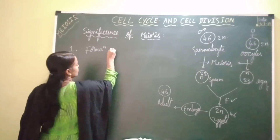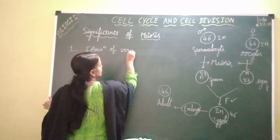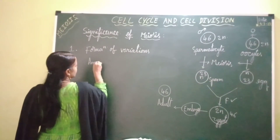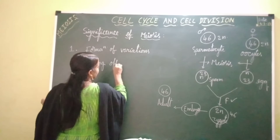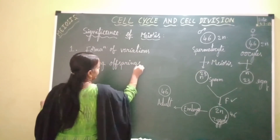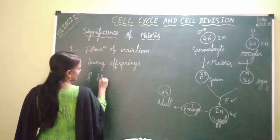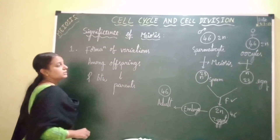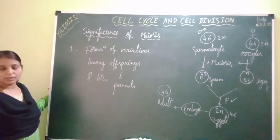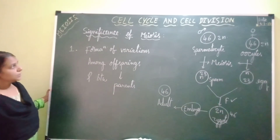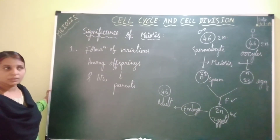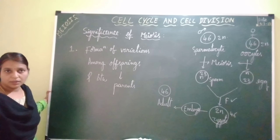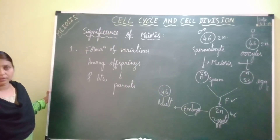Meiosis ensures the formation of genetic variations among offspring and between offspring and parents. These variations are important for evolution — that is, the formation of one species from another species. This is the significance of meiosis. In the next video, I will be giving some questions and tricks to solve tricky types of questions.